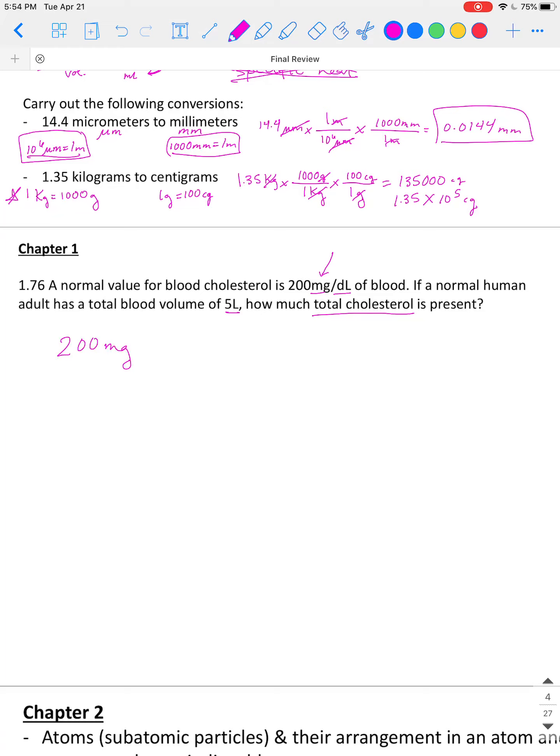So start with 200 mg cholesterol per 1 deciliter of blood. Now to use this other volume that it gives us, that one human has 5 liters of blood, we need to be able to convert from deciliters to liters. Now, this is not one I've asked you to memorize, but there are 10 deciliters in 1 liter.